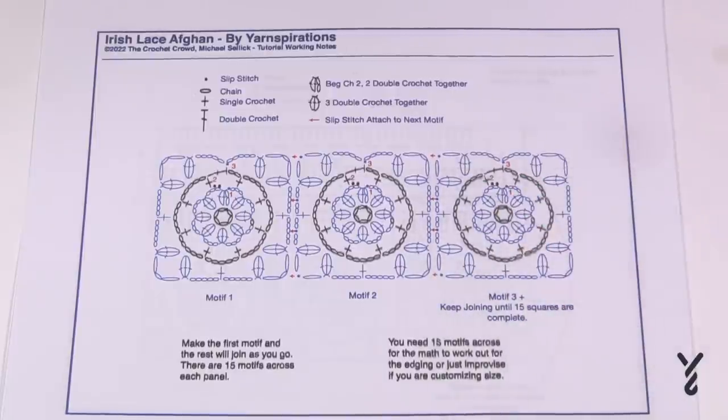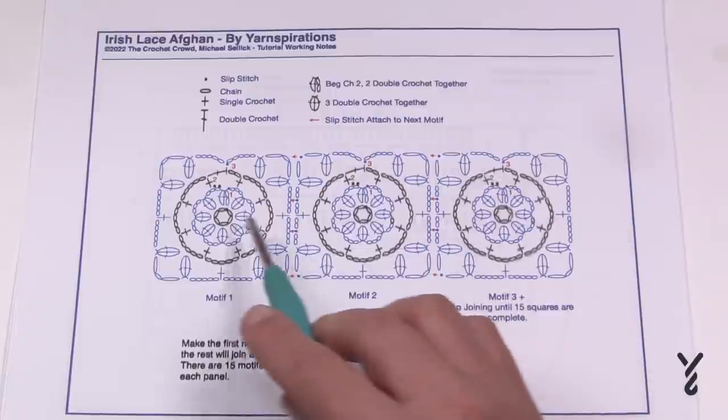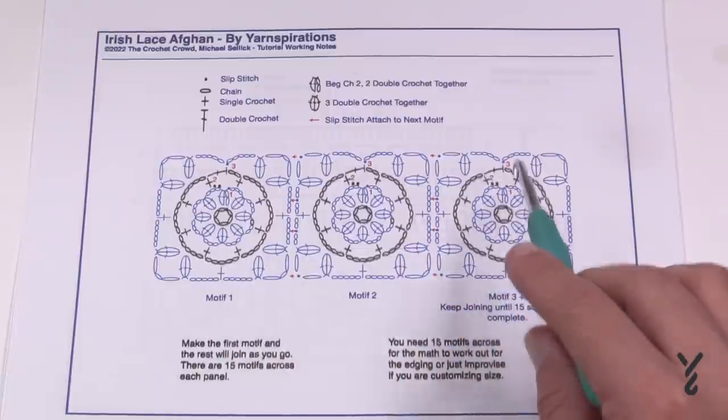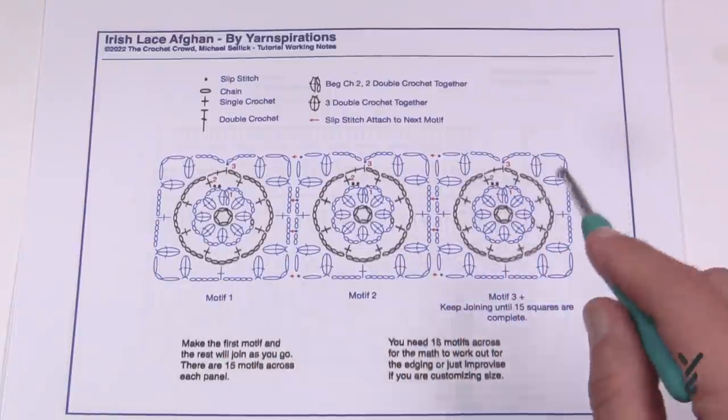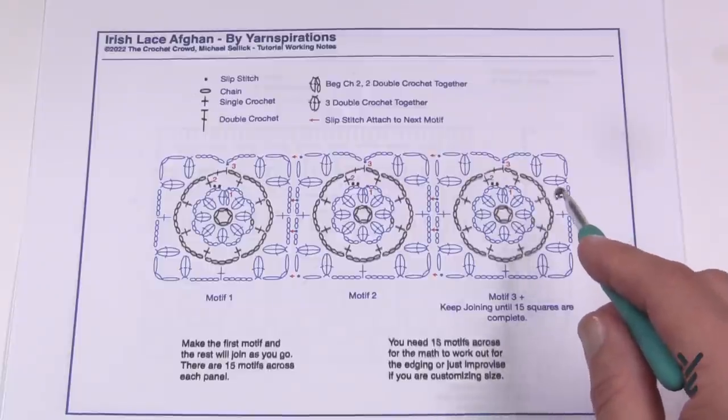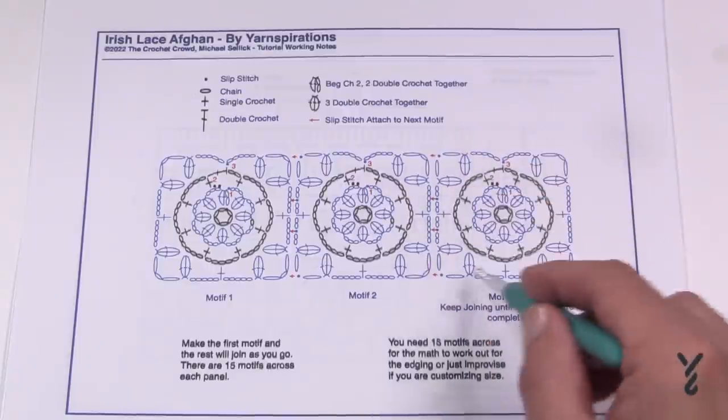So you just keep on attaching and building it very much like stacking Lego. Once there's 15 of those across then your panel is going to be ready. Now because I did this in diagram format you're going to notice is that there's going to be a slice in the pattern.